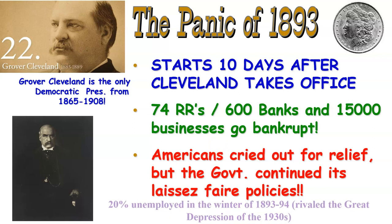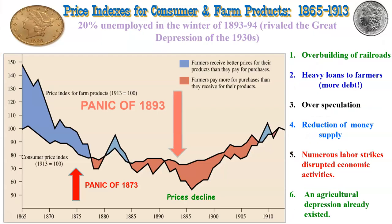People called out for relief, but the government continued its laissez-faire policies — just wait it out, don't mess with the economic system too much. The panic happened because of over-speculation, loans given out to farmers that pushed them further into debt, and a reduction of the money supply following the Purchase Act. Labor strikes broke out across the country, and agricultural depression had been pretty much the rule since the 1870s into the 1890s.